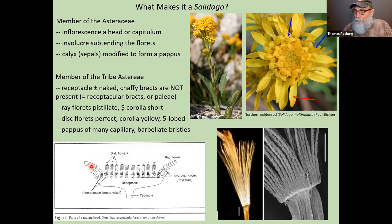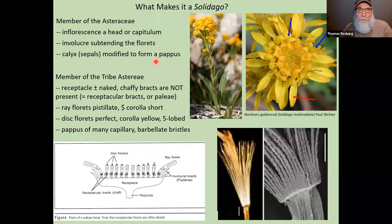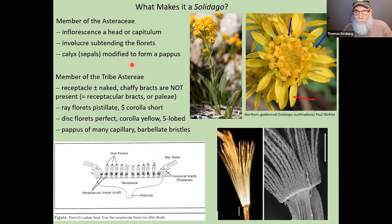Solidago is a member of the Asteraceae, which we reviewed last week. What makes it part of this family is the inflorescence — the head or capitulum — a mass of tiny florets. It has the involucre, a group of phyllaries around the base of the head, and a pappus, which is a modified calyx.